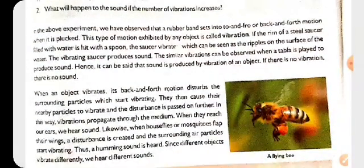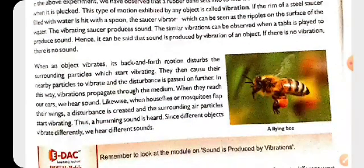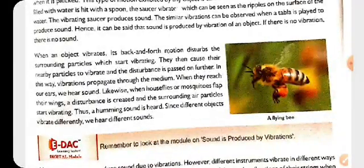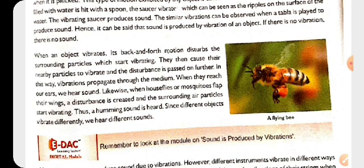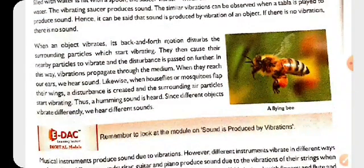When you see a drum, the membrane vibrates only when we hit it. When we hit it hard, it vibrates and produces sound. When an object vibrates, its back-and-forth motion disturbs the surrounding particles, which start vibrating. Then they cause their nearby particles to vibrate, and the disturbance is passed further on. In this way, vibrations propagate through the medium until they reach our ears, and we hear sound. Likewise, when houseflies or mosquitoes flap their wings, a disturbance is created.